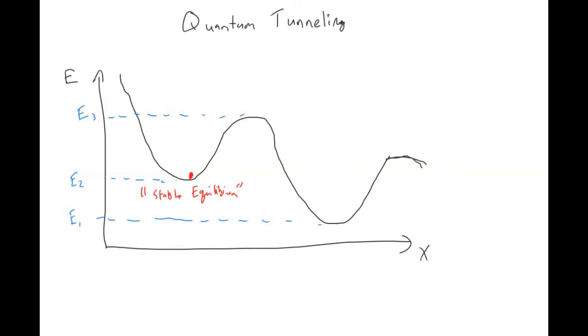The only way to get this red particle into the E1 energy state would be to give it enough energy. Basically, to move particle from energy two to energy one, we need to give particle at least energy greater than or equal to E3 to overcome this hump and then reside in energy one.